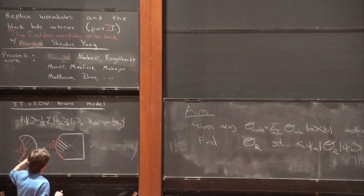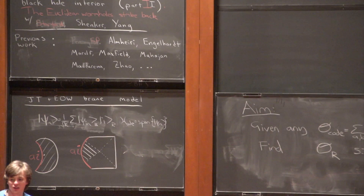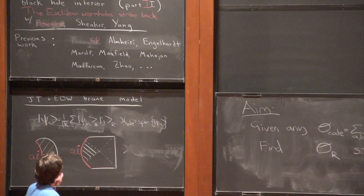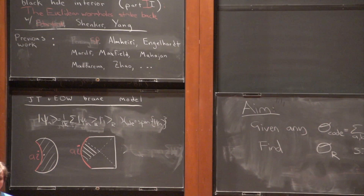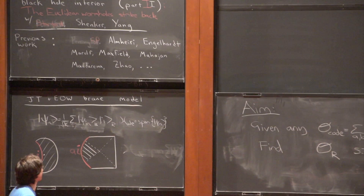The states Douglas was considering in his talk were states on a theory of pure JT gravity — no degrees of freedom except for an end-of-the-world brane. The end-of-the-world brane carried degrees of freedom, but those degrees of freedom were maximally entangled with the auxiliary reference system. So in that state, there are not really any degrees of freedom left in the interior that we could hope to reconstruct from the Hawking radiation. We need to change something to give us some things we naively shouldn't know about in the interior, but actually we do because of the magic of entanglement.